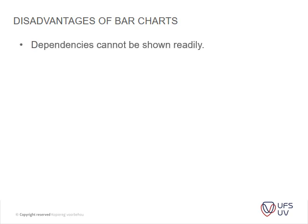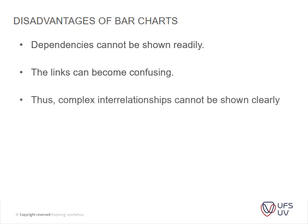The disadvantages of bar charts: dependencies cannot be shown readily, you can't show all the detail, the links can become confusing, and complex interrelationships cannot be shown clearly. My rule of thumb when doing schedules is don't overcomplicate it. Rather, when you do add a lot of detail, make sure you can scroll down or hide the necessary information, or make a new chart if you want to go into detail on when certain items need to be done.